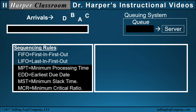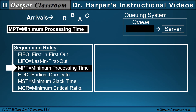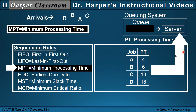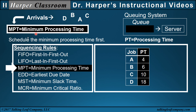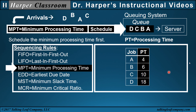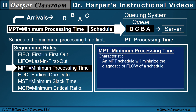The last four sequencing rules use information from each job. Let's start with the MPT rule — minimum processing time. The MPT rule assumes that each job comes with a processing time, the time to be processed through the server. Assume these times are in days, starting with the minimum and increasing. Jobs scheduled by the MPT rule will schedule the minimum processing time first, resulting in the schedule A, then B, then C, then D. A characteristic of the minimum processing time sequencing rule is that an MPT schedule will minimize the diagnostic of flow of a schedule, which we will look at later in this video.